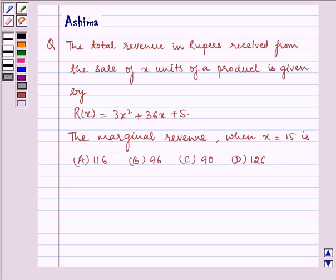Hello and welcome to the session. Let us understand the following question which says the total revenue in rupees received from the sale of x units of a product is given by R(x) = 3x² + 36x + 5.